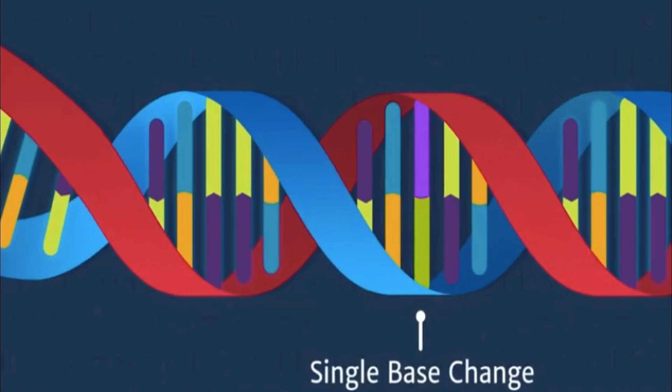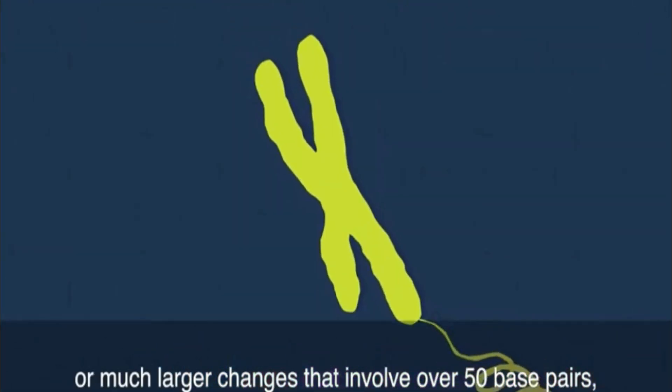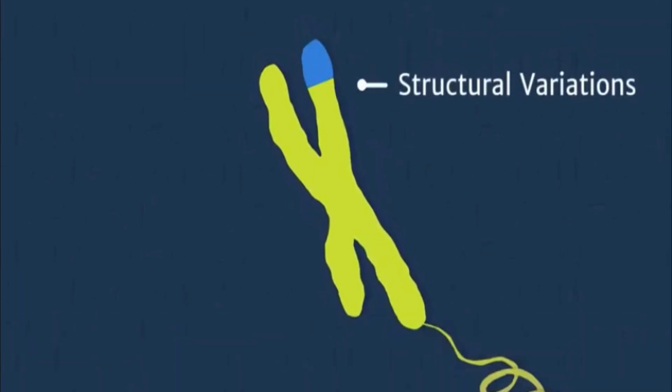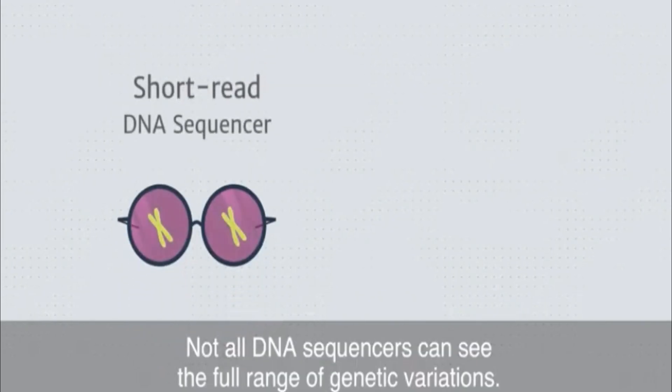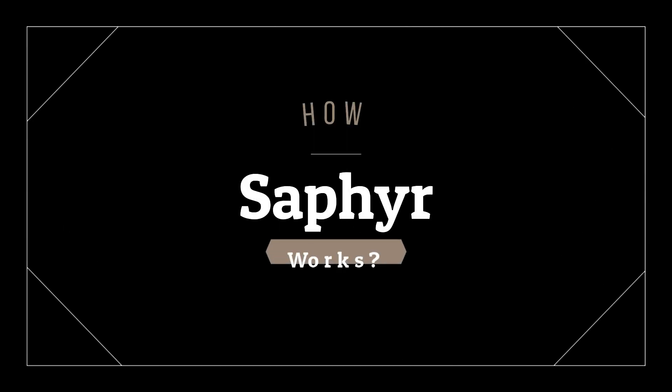The Saphyr system is comprised of an instrument, chip consumables, reagents, and a suite of data analysis tools. BioNano Genomics' Saphyr genome mapping device detects large structural variations and aberrations in chromosomes, which is something that standard gene sequencers can't do.